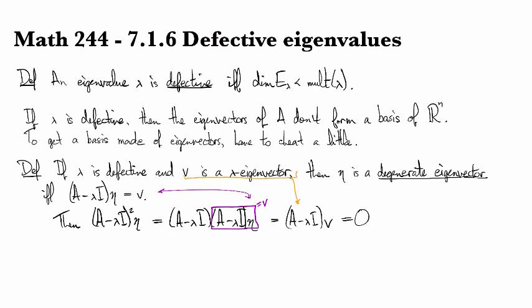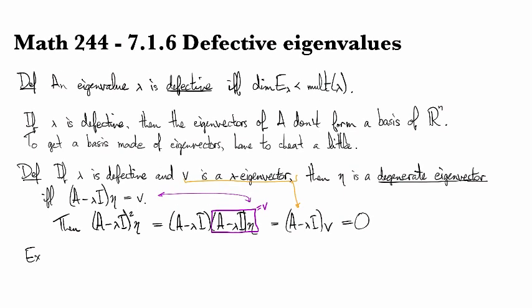Okay, so how do we go about finding a degenerate eigenvector? So let's look at this matrix. We'll take A to be [5 -4 0; 1 0 2; 0 2 5]. Alright. If we look at the characteristic polynomial for this guy, it is the determinant of [5-lambda -4 0; 1 -lambda 2; 0 2 5-lambda].